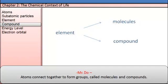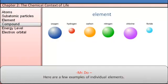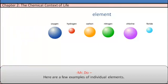Atoms connect together to form groups called molecules and compounds. Here are a few examples of individual elements like oxygen, hydrogen, carbon, nitrogen, chlorine, and fluoride.